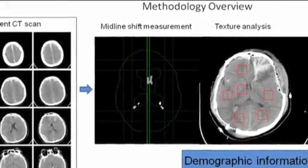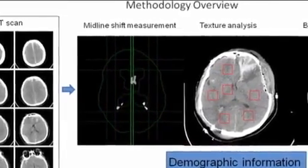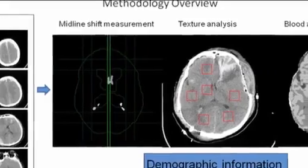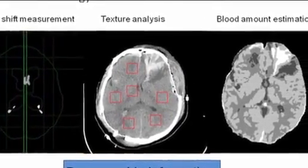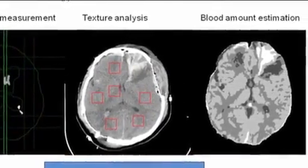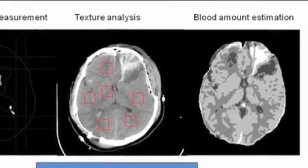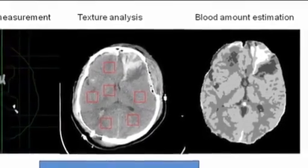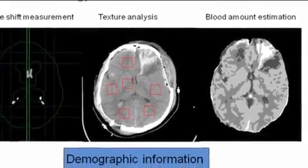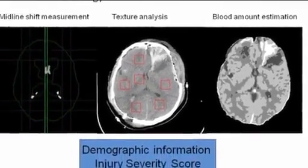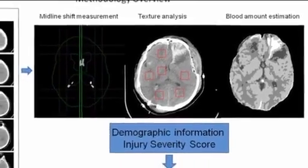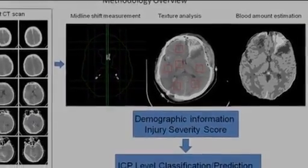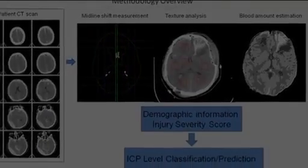The next step includes extraction and analysis of other features, such as various texture information of CT images and blood amount estimation. Our approach also uses the extracted features as well as other demographic information to predict ICP. Machine learning algorithms are used to model the relationship between these features and the ICP.